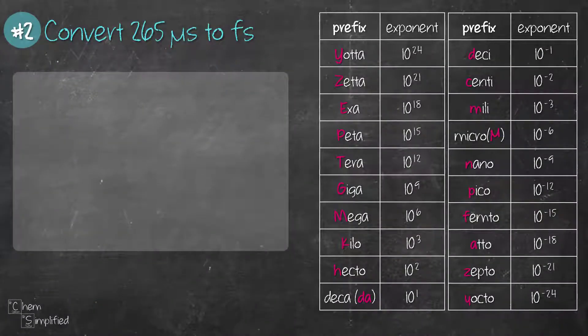Moving on to the second question, we need to convert from 265 microseconds to femtoseconds. Now this question is slightly more difficult than the first one because it involves a conversion from one SI prefix to another SI prefix. So we'll use the same method except we're going to convert from microsecond to the base unit, which is second. From the base unit second, we're going to convert it to femtosecond in two steps.